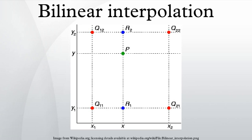As seen in the example on the right, the intensity value at the pixel computed to be at row 20.2, column 14.5 can be calculated by first linearly interpolating between the values at column 14 and 15 on each rows 20 and 21, and then interpolating linearly between these values.